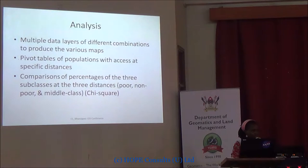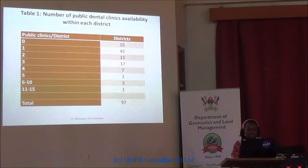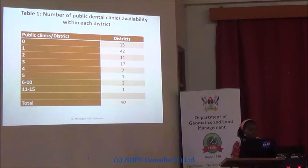The three income classes were: the poor, earning less than one dollar a day; the near-poor, living on just one dollar a day; and the middle class, earning two dollars a day. For our results, the majority of districts only had one facility — 42 of the 97 had one facility, and 15 of the 97 actually had no public facility at all offering dental services, which is quite concerning.